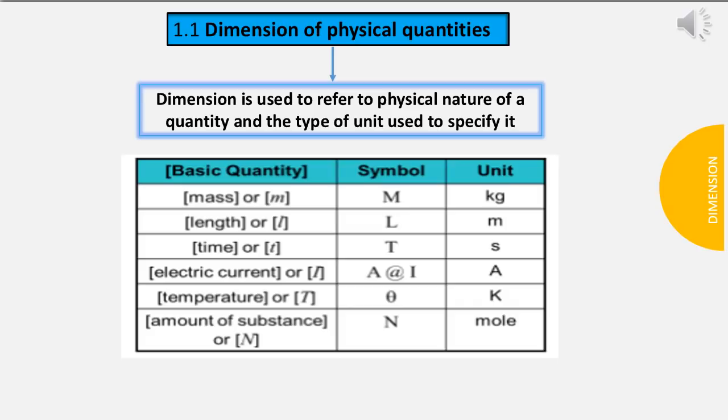Dimension for mass: Symbol M, Unit kilogram kg. Dimension for length: Symbol L, Unit meter m. Dimension for time: Symbol T, Unit second s.